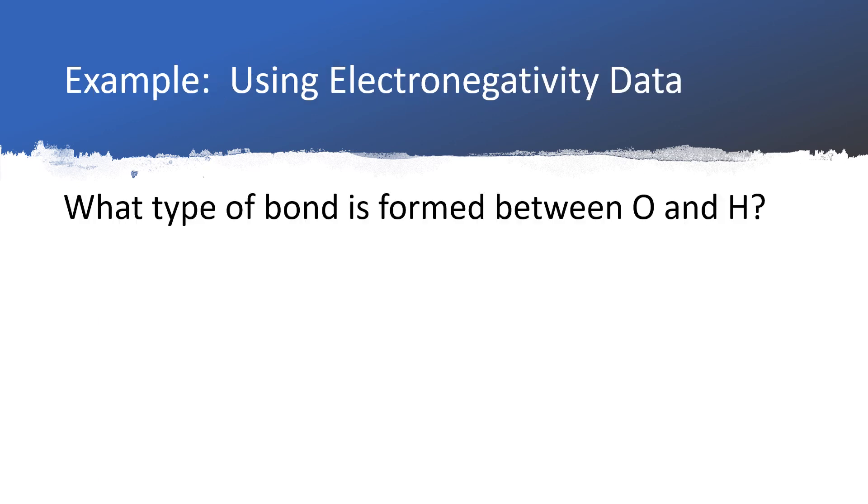This question is asking us to use electronegativity data to find the type of bond that's formed between oxygen and hydrogen. You may want to pause the video and go back a couple of slides and look up those numbers. I found that oxygen has an electronegativity value of 3.5, where hydrogen has an electronegativity value of 2.1. If we subtract these, we get a difference in electronegativity of 1.4. I'll label that delta EN - delta means difference. So we just subtracted these two numbers and EN stands for electronegativity. If our difference in electronegativity is 1.4, this will correspond to a polar covalent bond. You can go back one slide and see the breaking points. 1.4 falls within the range for a polar covalent bond.